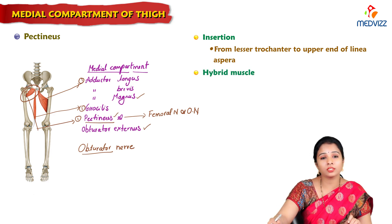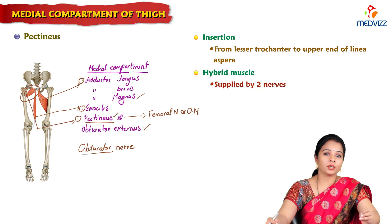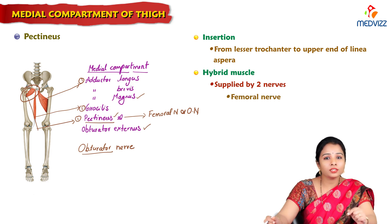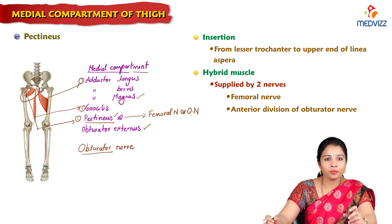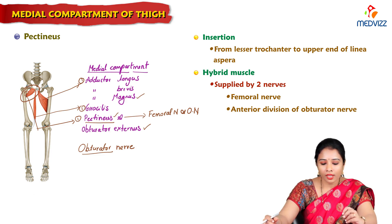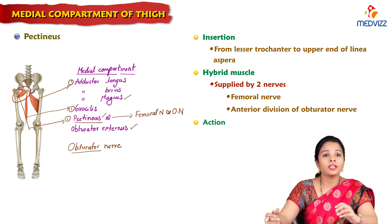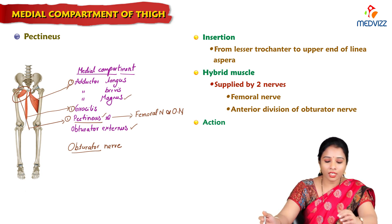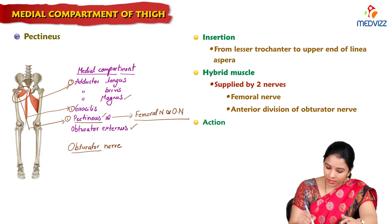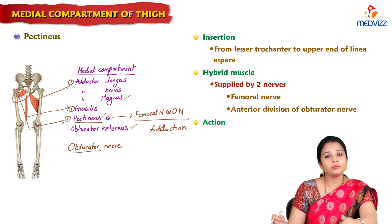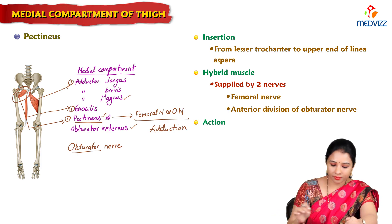Pectineus is a hybrid muscle because it is supplied by two nerves: the femoral nerve and the anterior division of the obturator nerve. The action of pectineus is adduction — it helps in the adduction of the hip joint.